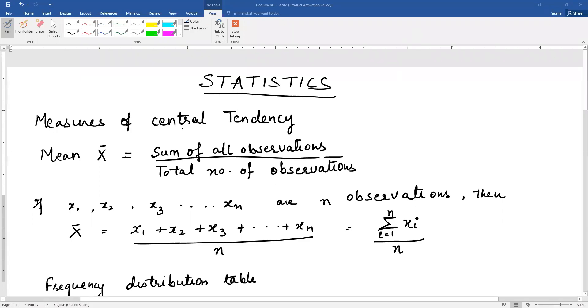Good morning students. Today we will be taking the measures of central tendency in the chapter statistics. There are three measures of central tendency: mean, mode and median. Now first of all, mean. Mean is sum of all observations divided by total number of observations, and this is how we denote this by x bar.